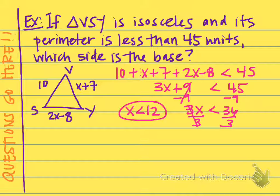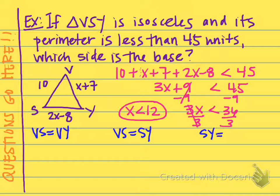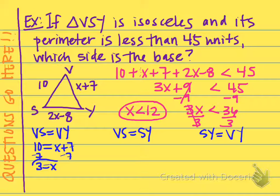The value of x must be less than 12. So now we're going to consider three different scenarios. VS could equal VY — those could be the two that are congruent. If VS equals VY, then 10 equals x plus 7. Subtracting 7 from both sides, x equals 3. That could be possible because x must be less than 12, so if x is 3, that's possible. We'll come back to this one in just a moment.